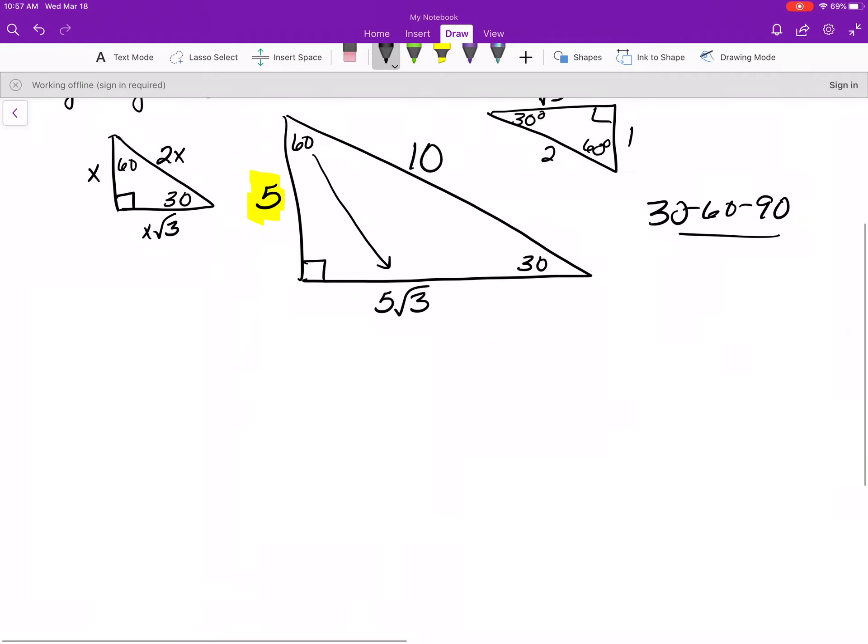We have another right triangle that you have to memorize. It's the 45-45-90 right triangle. 45-45-90 means that the two angles are exactly the same, which means the two sides across from those two angles are exactly the same. And then the hypotenuse is always going to be whatever that side is times the square root of 2.